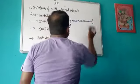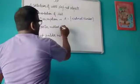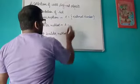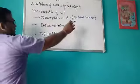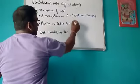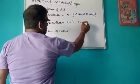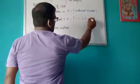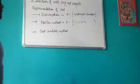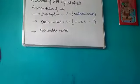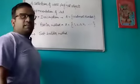In the roster method, we write the elements of the set. For example, for the set of natural numbers, the roster form would be 1, 2, 3, 4, and so on. In the roster method, we always write the elements explicitly.